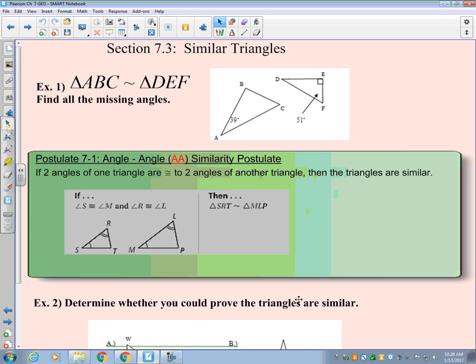Triangle ABC is similar to triangle DEF. We're going to find all the missing angles. So I'm missing angle B, I'm missing angle C, I'm missing angle D. So I know that angle A matches up or corresponds to angle D. So I know angle A is 39, so D has to be 39 degrees.